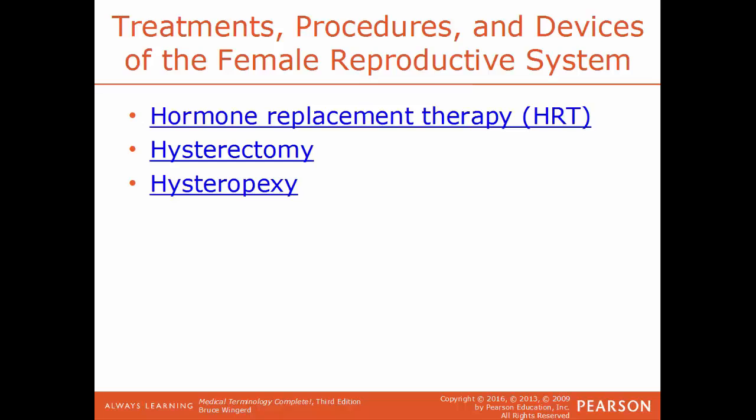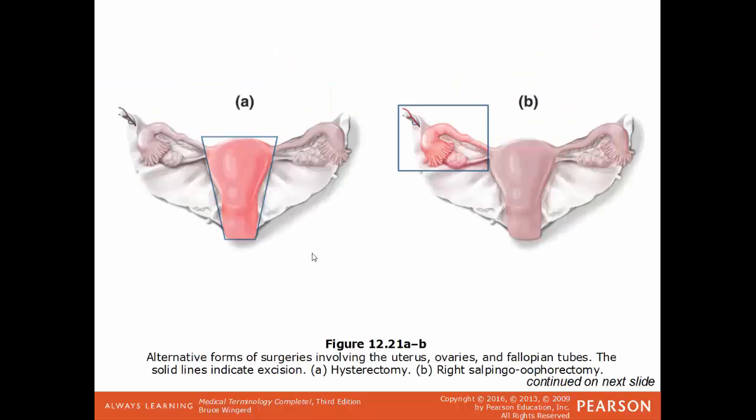Hysterectomy is the surgical removal of the uterus, either the entire structure or only parts. Hysteropexy is a surgical procedure to fixate an abnormally movable uterus. Examples of related surgeries: a hysterectomy removes the uterus; a right salpingo-oophorectomy removes the right ovary and fallopian tube; a bilateral salpingo-oophorectomy removes both fallopian tubes and both ovaries; and a bilateral panhysterectomy removes everything — the uterus, both fallopian tubes, and both ovaries.